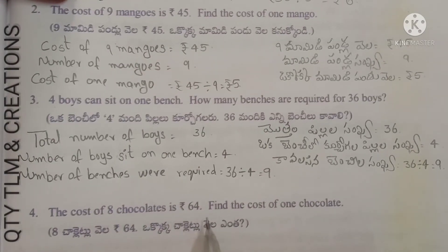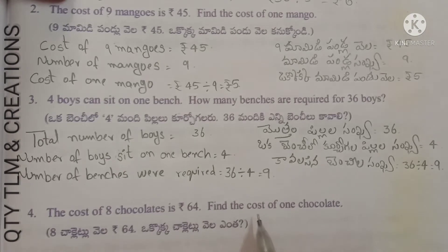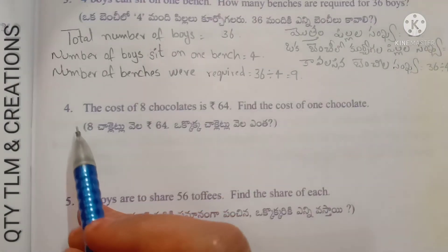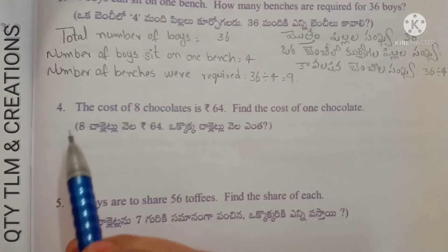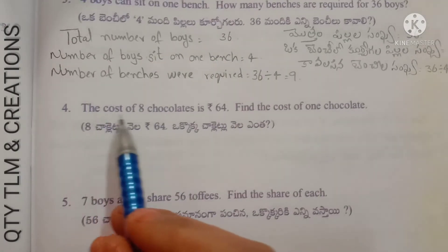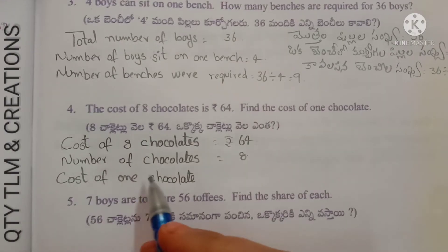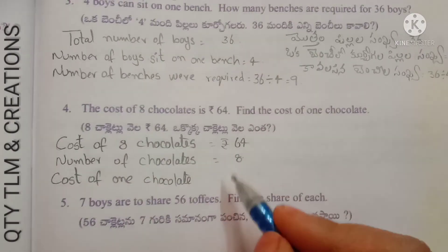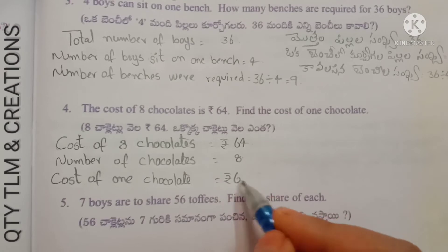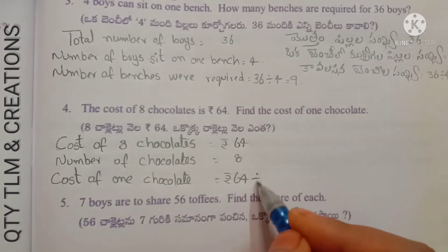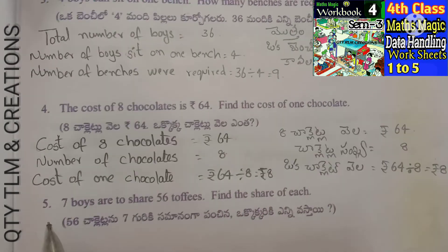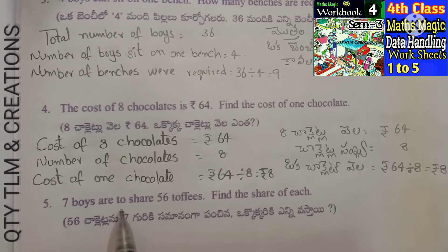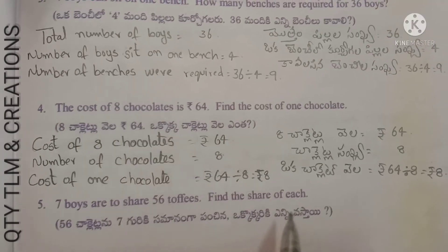Next question: the cost of 8 chocolates is 64 rupees. Find the cost of 1 chocolate. Cost of 8 chocolates = 64. Number of chocolates = 8. Cost of 1 chocolate = 64 divided by 8 = 8 rupees.